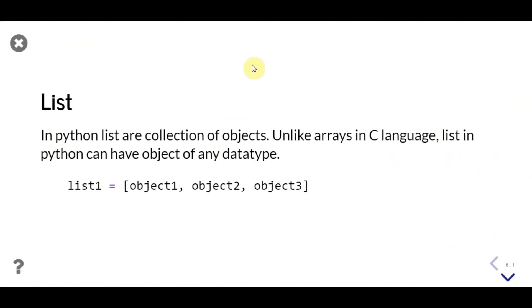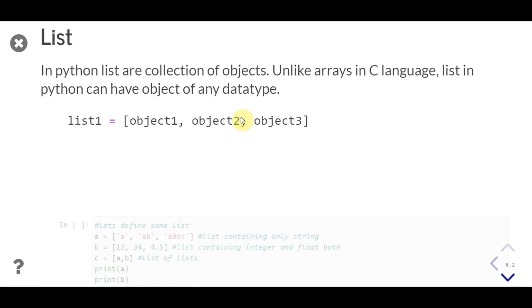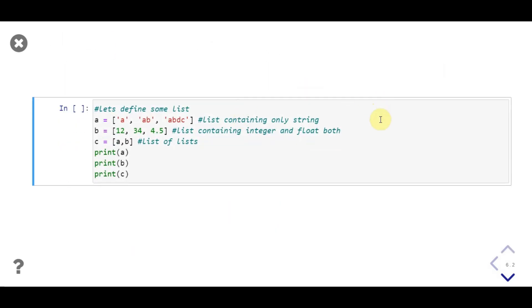Welcome. In this video we'll learn about lists. A list is a collection of objects in Python. A list can also store objects of different data types. We use square brackets to define a list; inside a list, objects are separated by commas. In this example we first store a list consisting of strings in variable a.